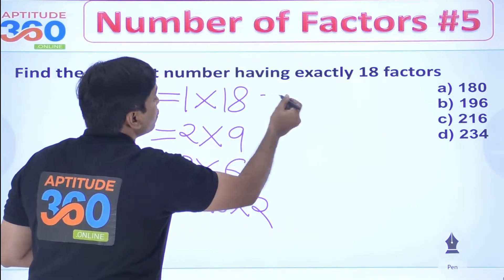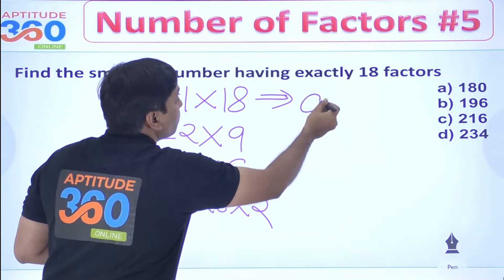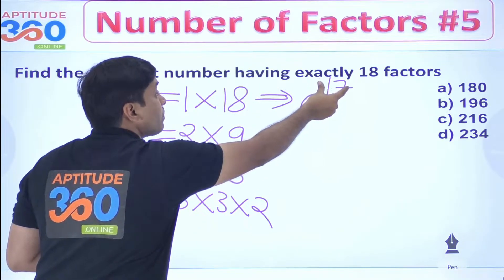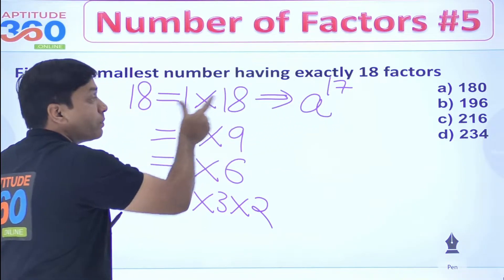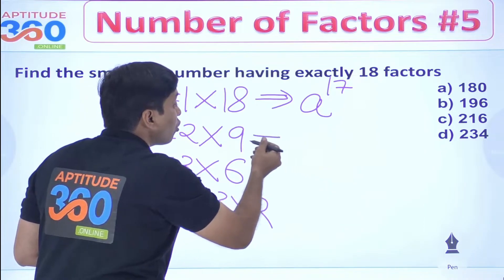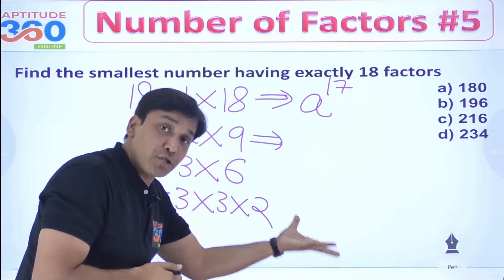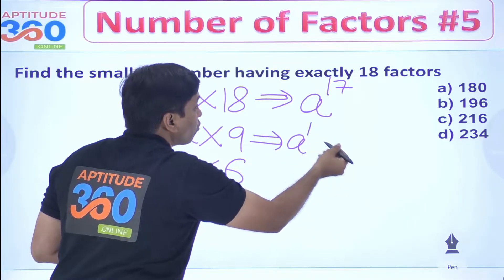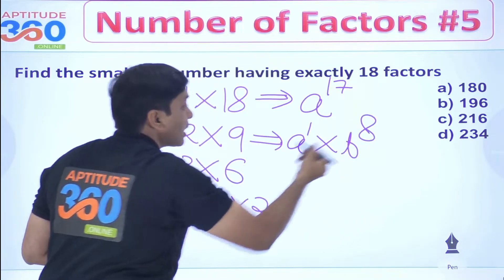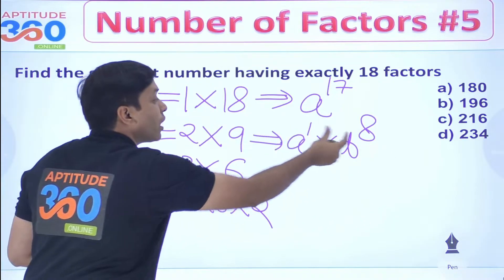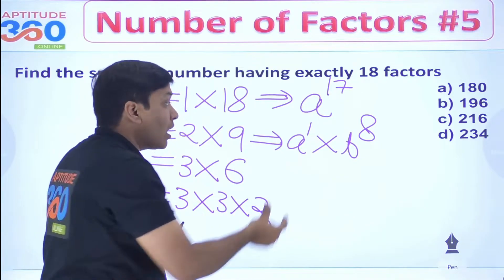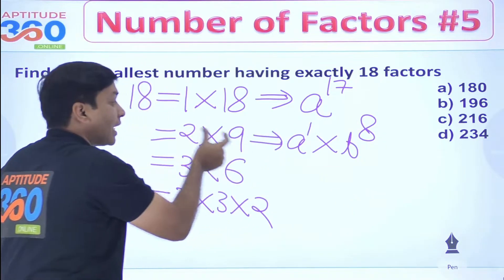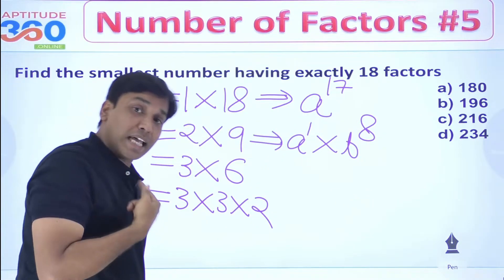If 18 is written as a single factor, the number would be a prime to the power 17 — because 17 plus 1 is 18. For the case 2 into 9, the prime factorization would look like A to the power 1 and B to the power 8, where A and B are prime numbers. Then 1 plus 1 is 2 and 8 plus 1 is 9, and 2 into 9 gives 18.